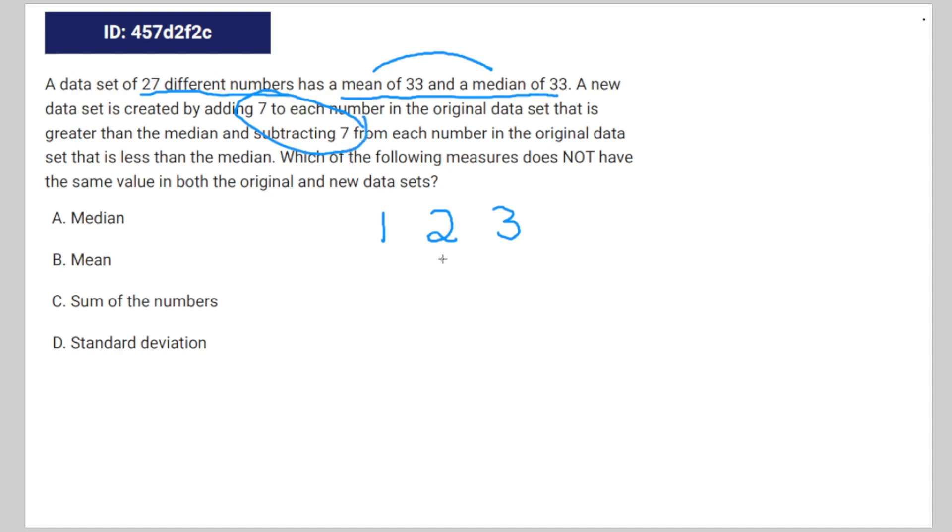Therefore we can do the same exact operation they did to the original data set and find out what happens. So that's going to be subtracting 7 from 1, you get negative 6, and then adding 7 to 3, you get positive 10. And of course you still have the same median of 2.